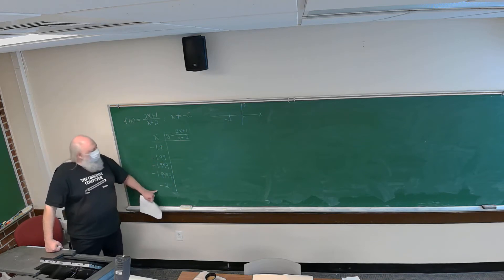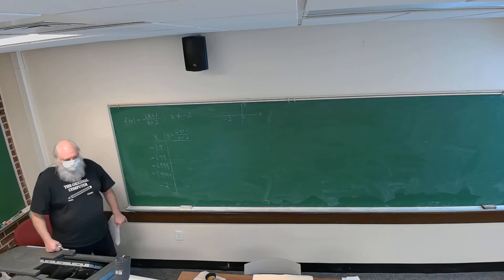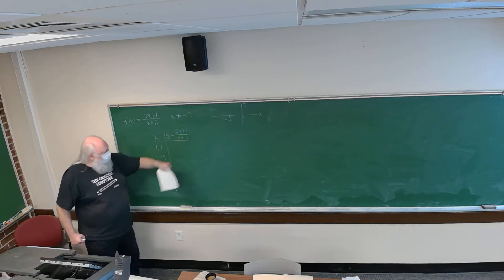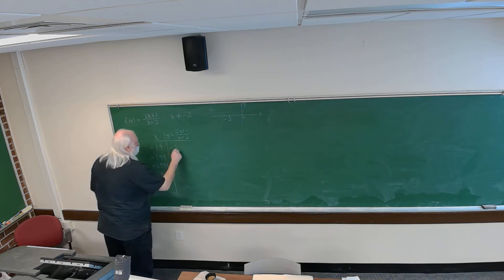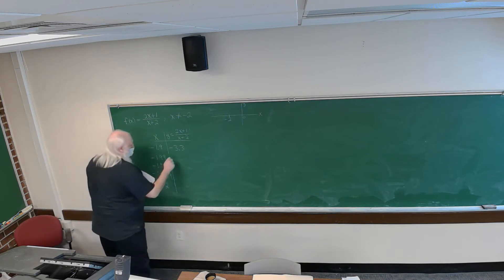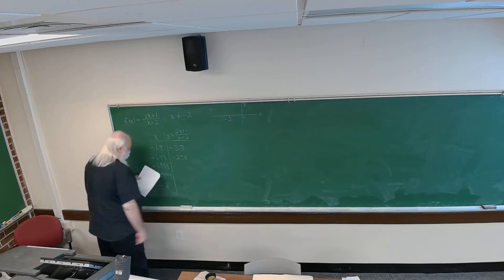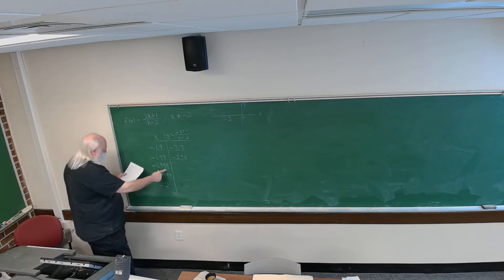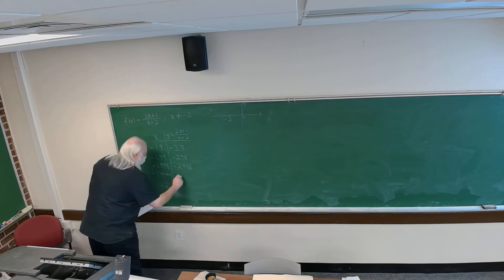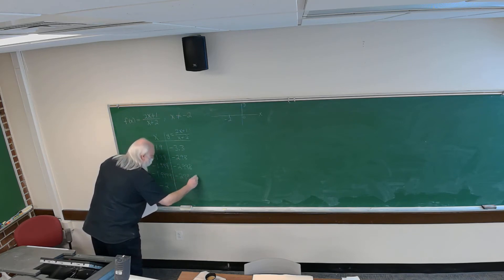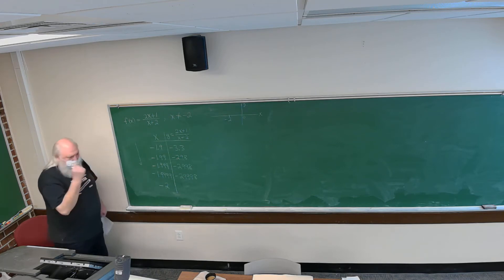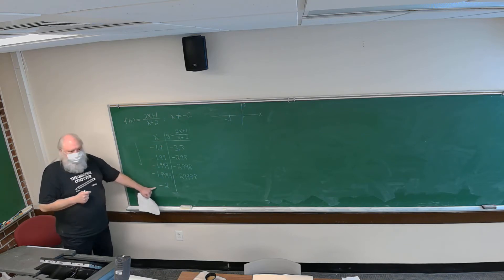For each of these x coordinates we calculate the corresponding y coordinates using a calculator. When I plug in minus 1.9 for x, the y coordinate is minus 3.3. When I put in minus 1.99, the y coordinate is minus 29.8. When I put in minus 1.999, the y coordinate is minus 2998. As we go down the x values, each is getting closer to minus 2.